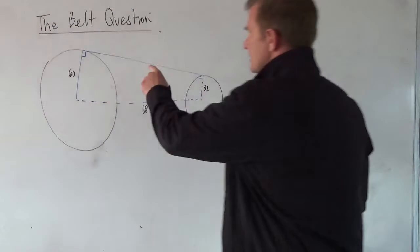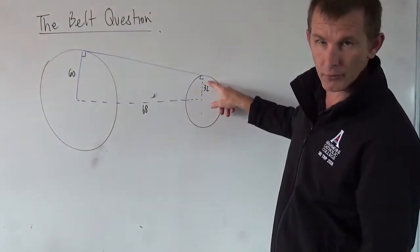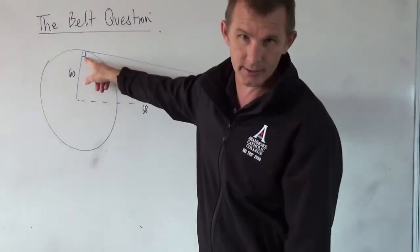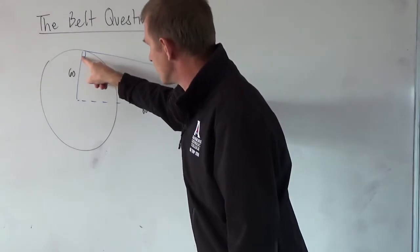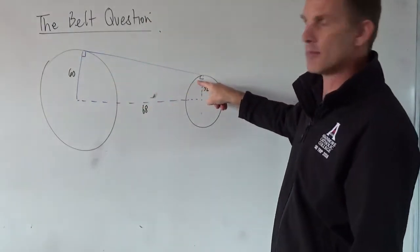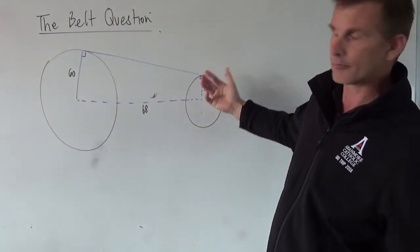First thing to recognize is this line is going to be a tangent to both circles, tangent meaning it's at 90 degrees. So with that idea applied, that means that this angle here and this angle here being 90 degrees, that means that this one here and this one here are parallel.